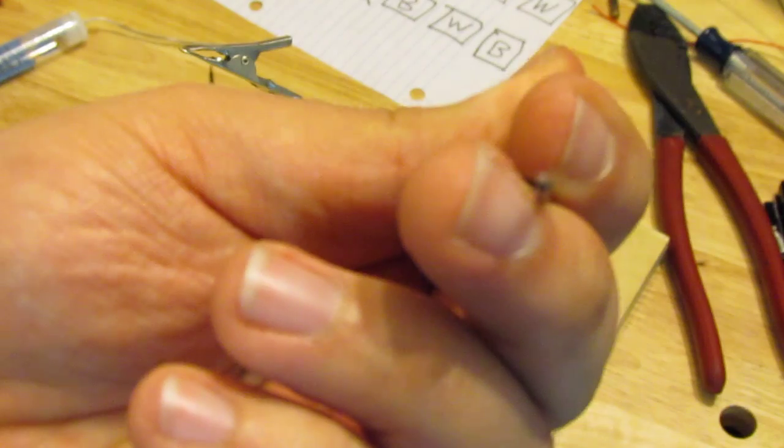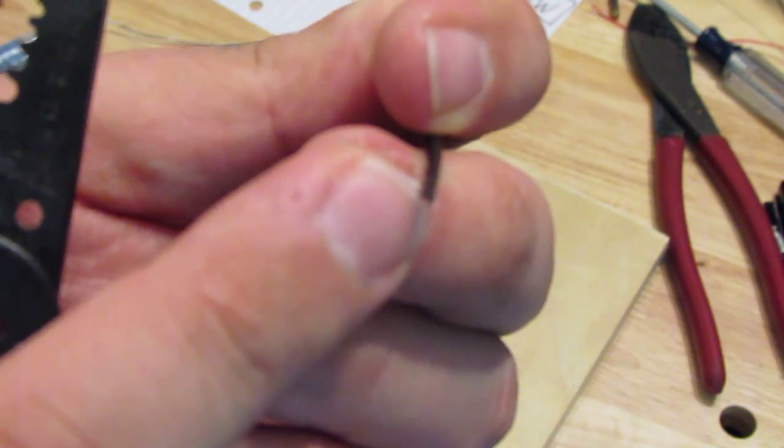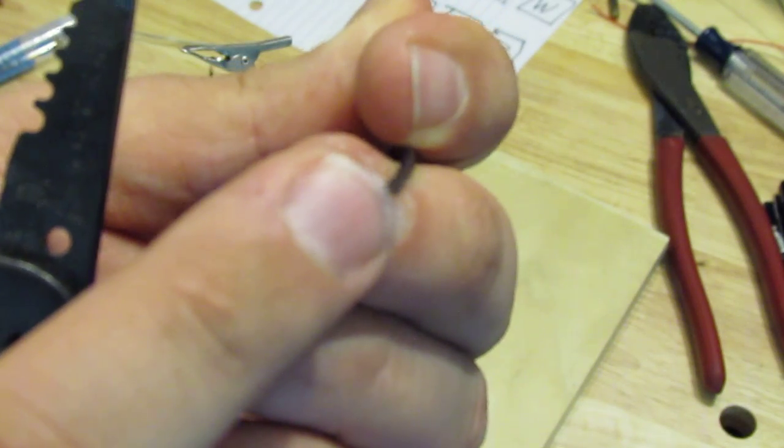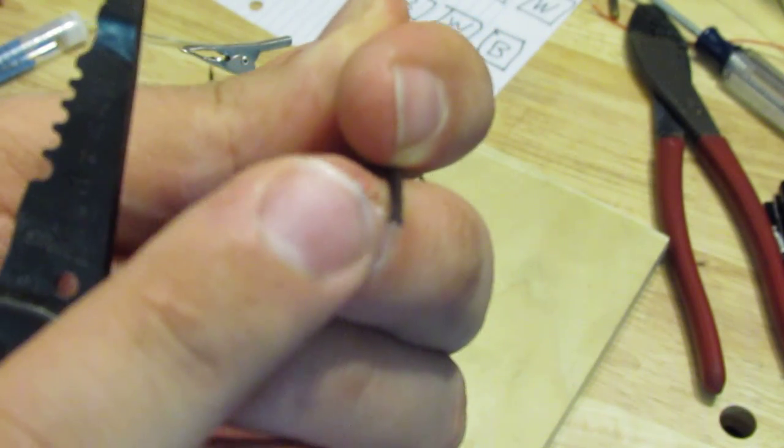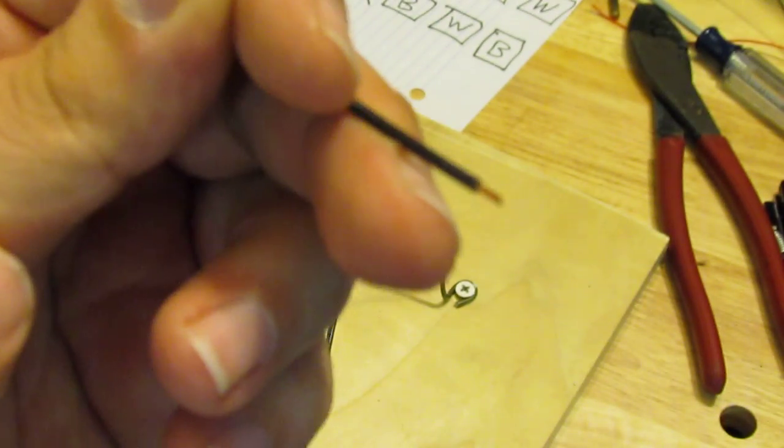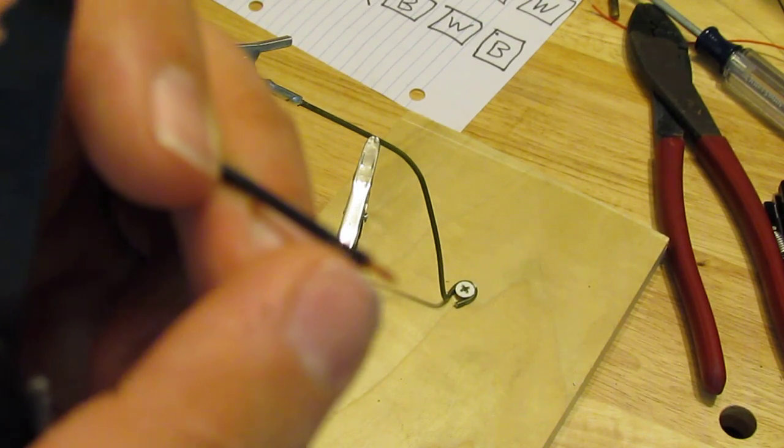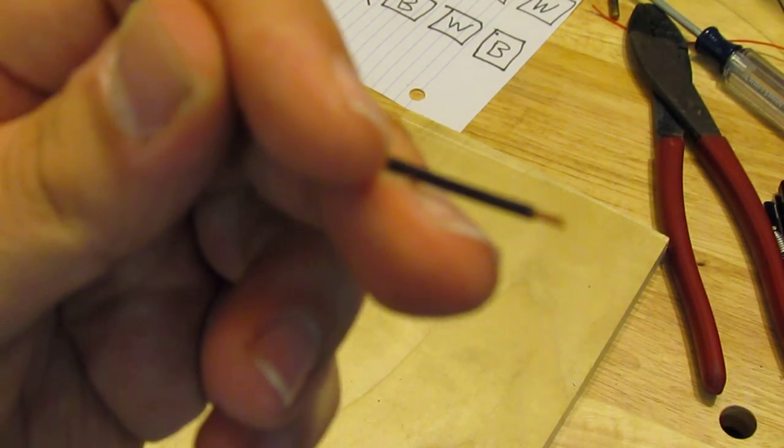So since this is an 18 gauge solid wire, you can tell if it's solid or stranded by looking at the core. If the core has multiple strands of copper in it, that means it is a stranded wire. Since this is only one big thick copper wire inside of it, it means it's a solid core wire.